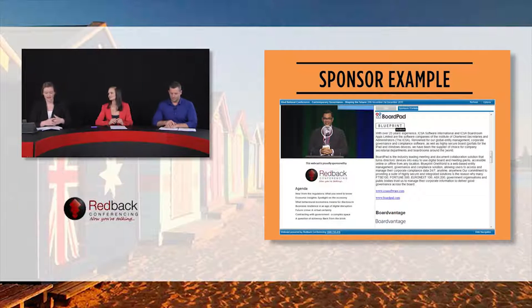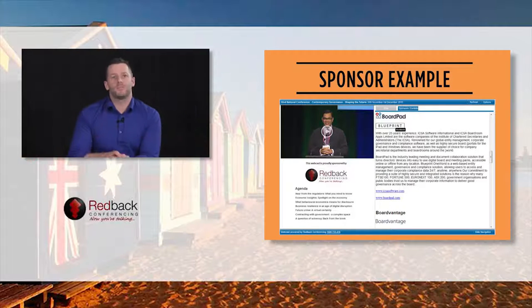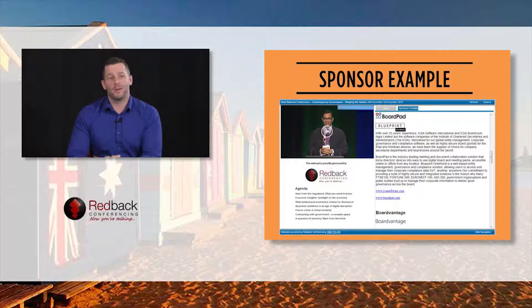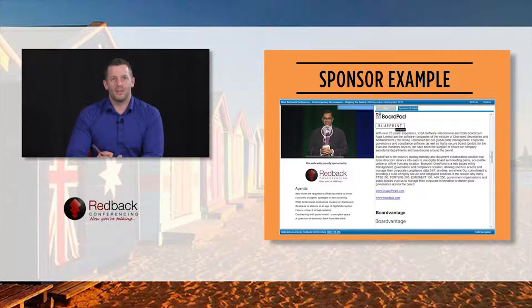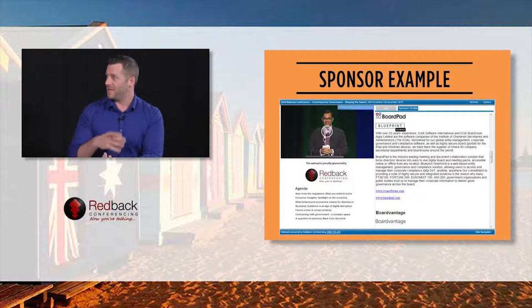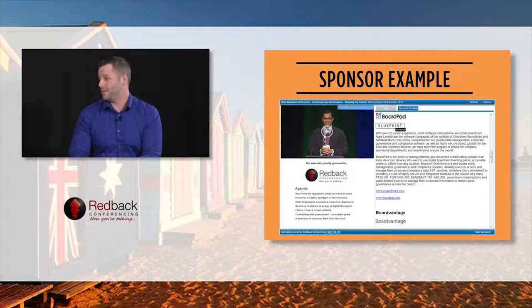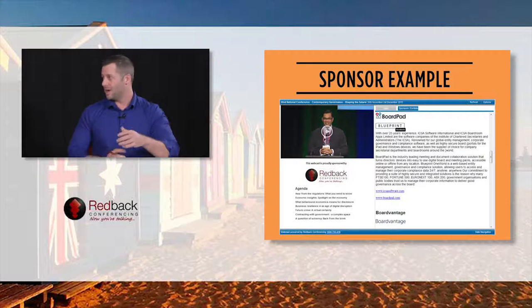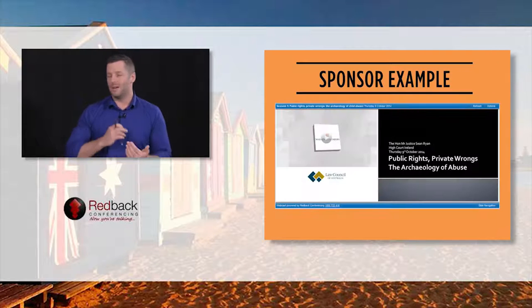Sponsorship works in a couple of different ways. Using a hybrid event example: a sponsor's logo appears below the video player saying the webcast is proudly sponsored by them, and on the right-hand side there's a sponsors and exhibitors tab — a dynamic, clickable, linkable space for every sponsor. This lives for the entire hosting duration, a minimum of 12 months, giving huge brand exposure and return on investment. It's no longer just a pull-up banner; it's continuous exposure.